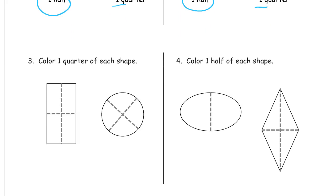And then it says color one quarter of each shape. So quarters are one of four equal parts, so that's four equal parts for the rectangle, so I'm just going to color one of those four. And then same thing for the circle, I'm going to color one of these four pieces.